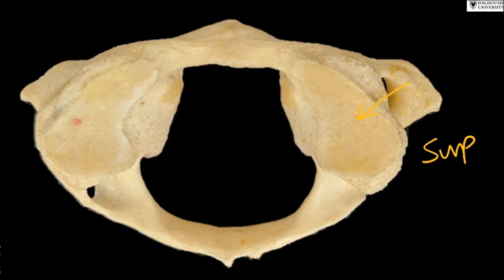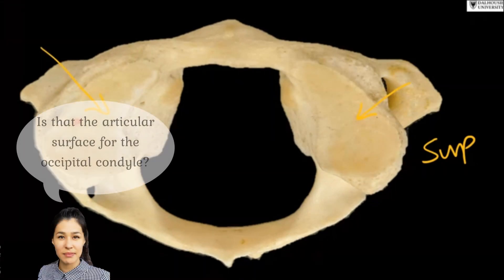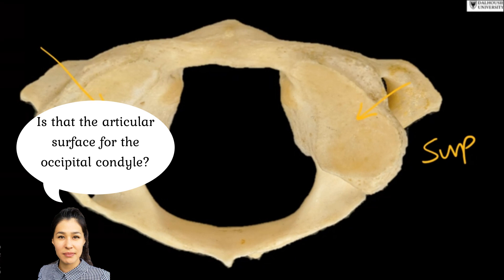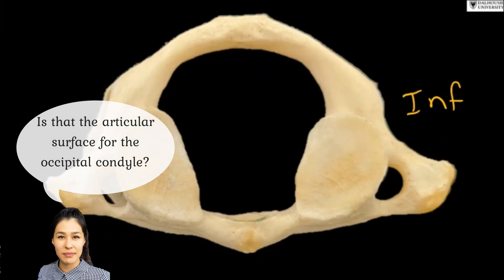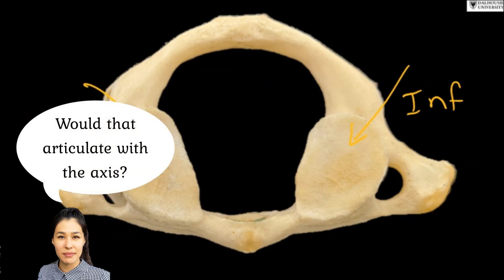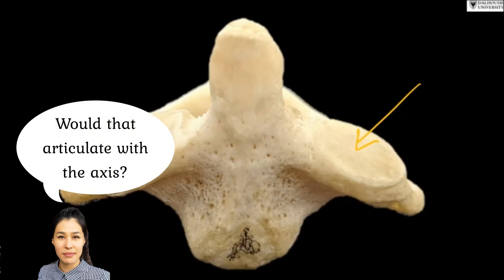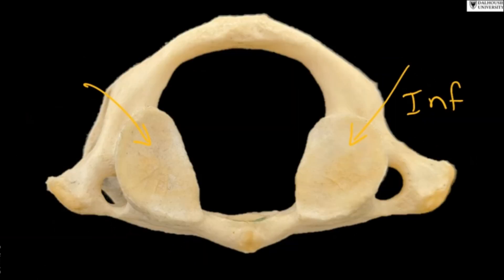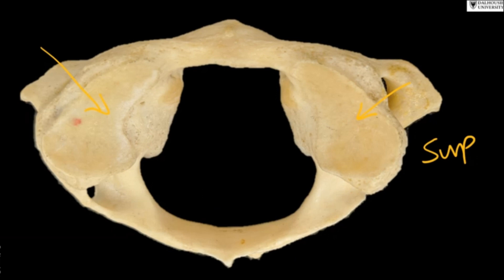You can see that this surface is very smooth, present on the other side as well. This one will articulate with the occipital condyles, and the difference is that this one is circular. If you remember, the occipital condyles are more or less kidney-shaped. So that's how it is easy to differentiate between the upper and lower surface of the atlas vertebra.